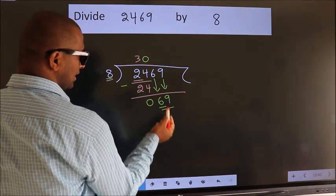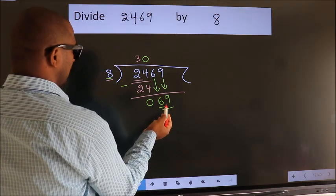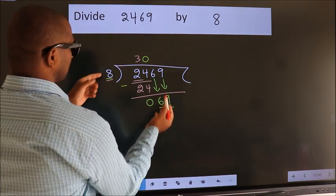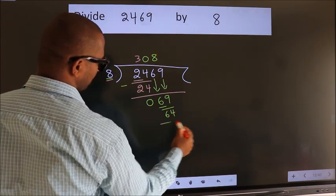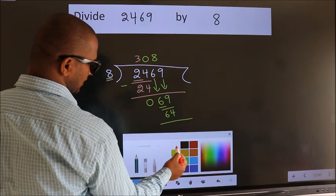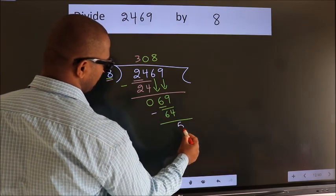So, 69. A number close to 69 in 8 table is 8 threes, 64. Now, we subtract. We get 5.